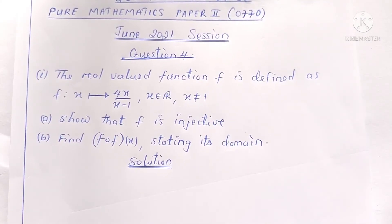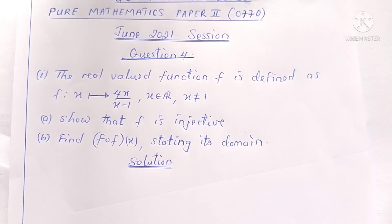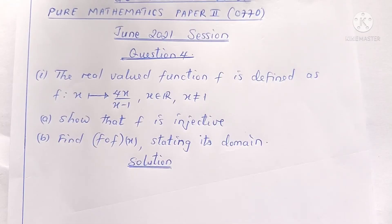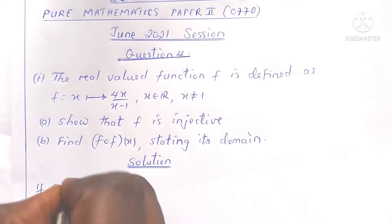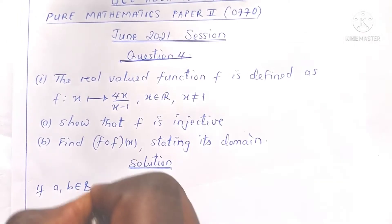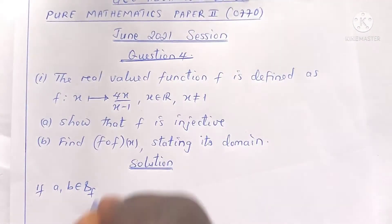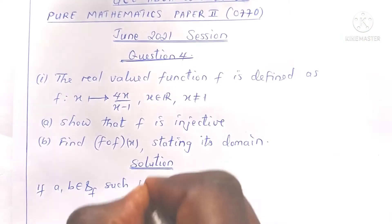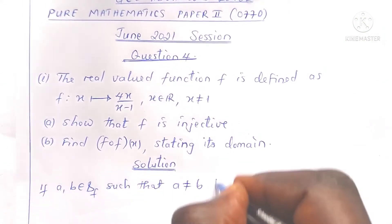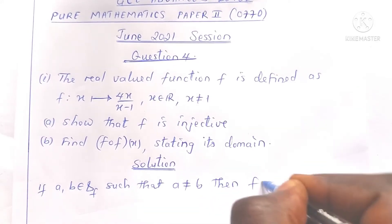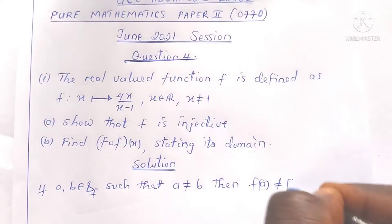We know that an injective function is a function that maps distinct elements of its domain to distinct elements of its co-domain. Mathematically, we say if a and b are elements of the domain of a given function f such that a is different from b, then f of a must be different from f of b.